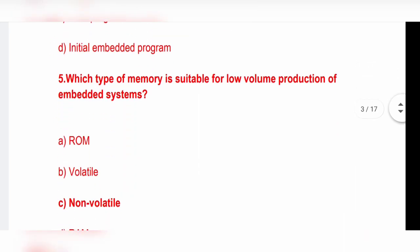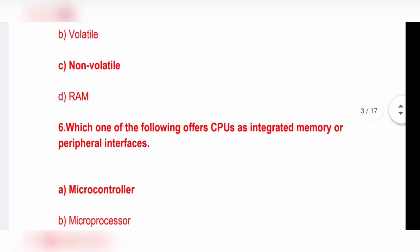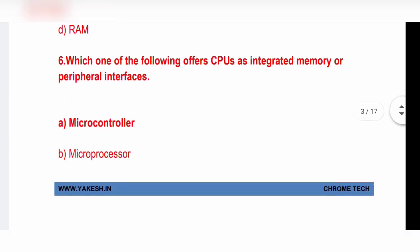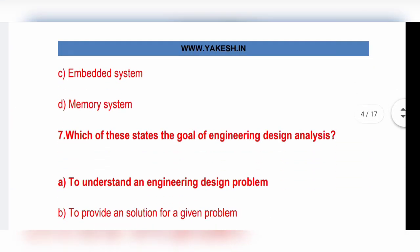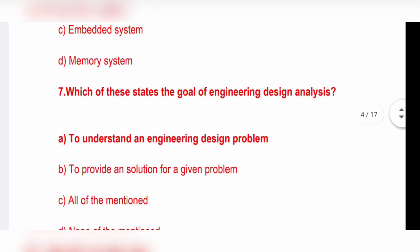Next question: Which type of memory is suitable for low volume production of an embedded system? Option C, non-volatile, is the correct answer. Which one of the following CPU has integrated memory or peripheral interface? Option A, microcontroller, is the correct answer. Which states the goal of engineering design analysis? Option A, to understand an engineering design problem.